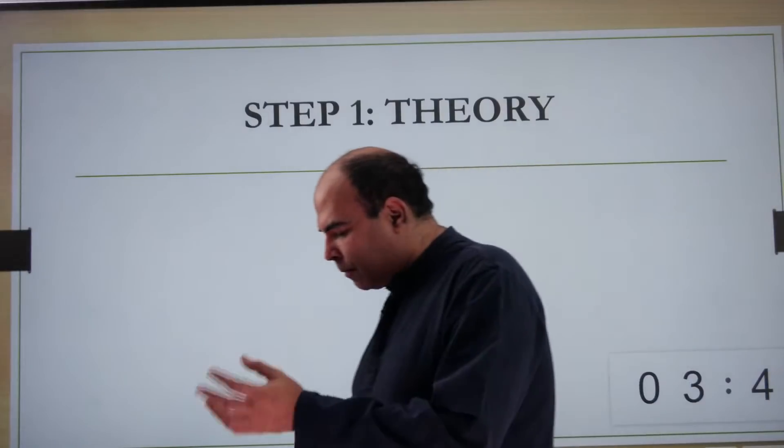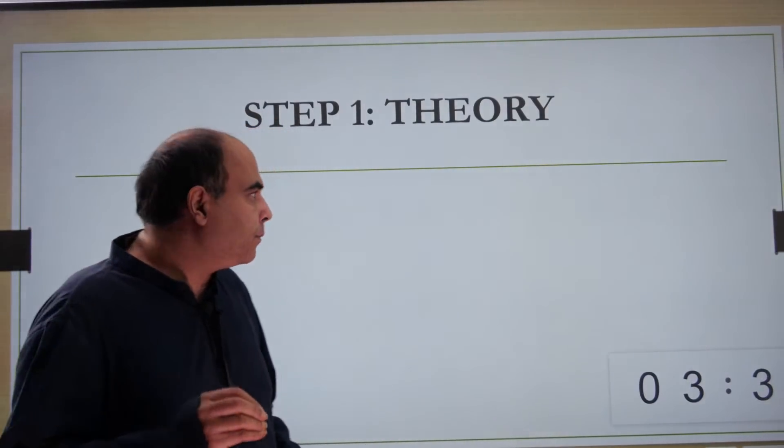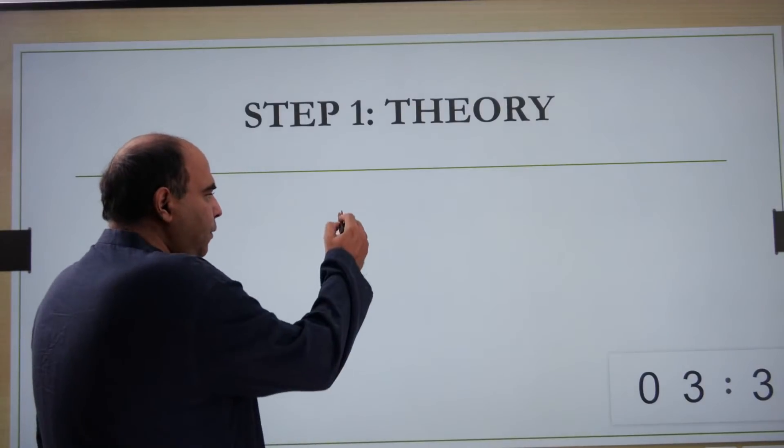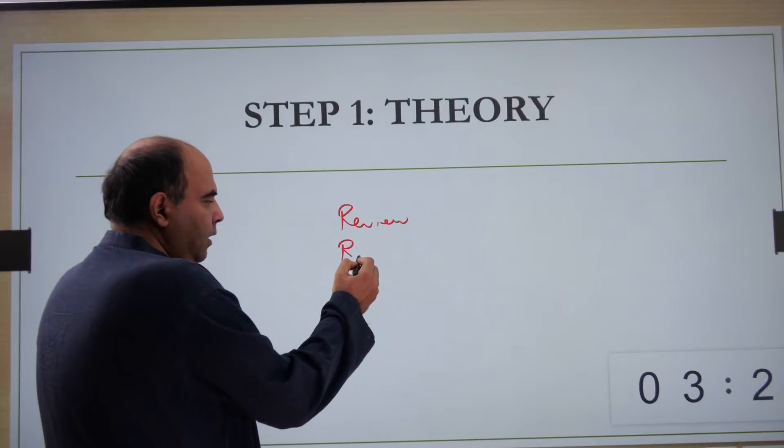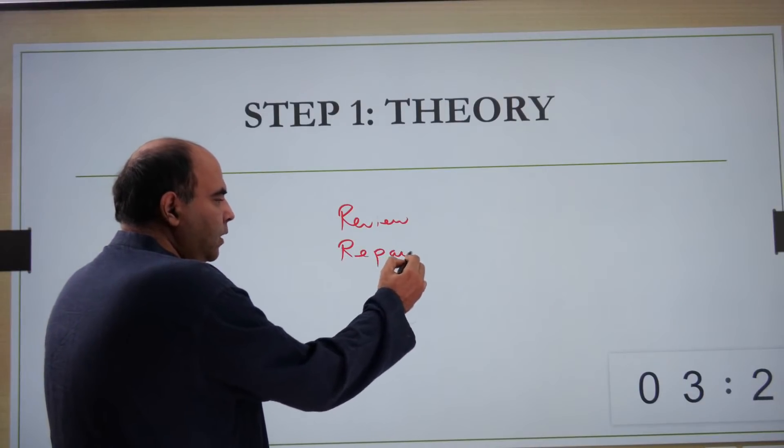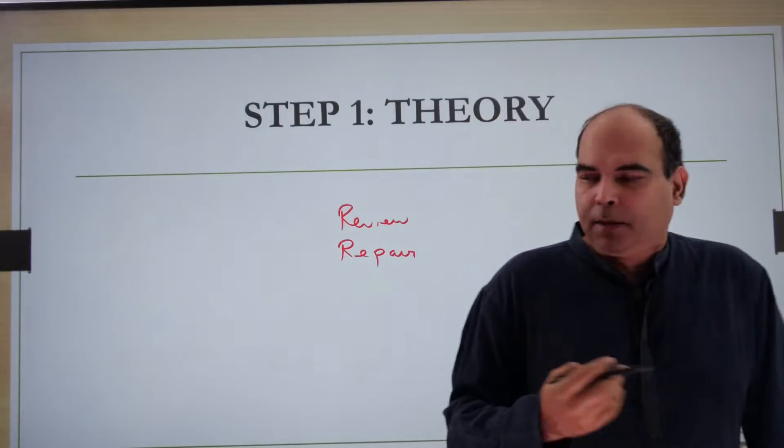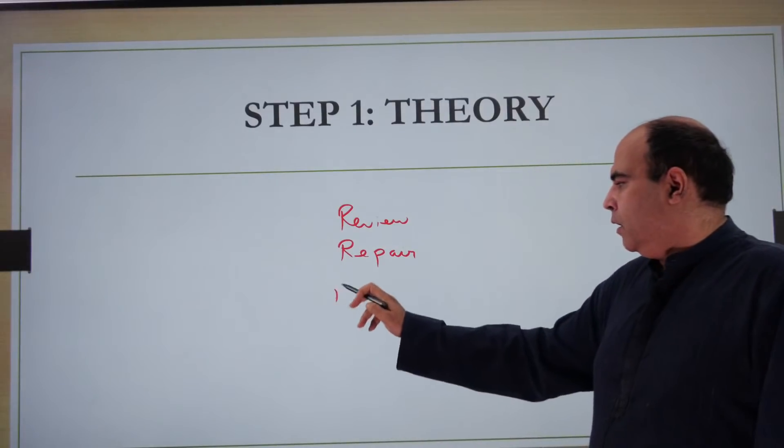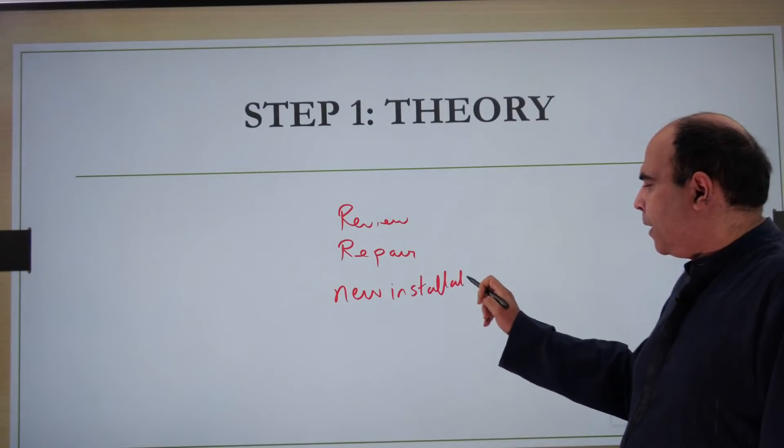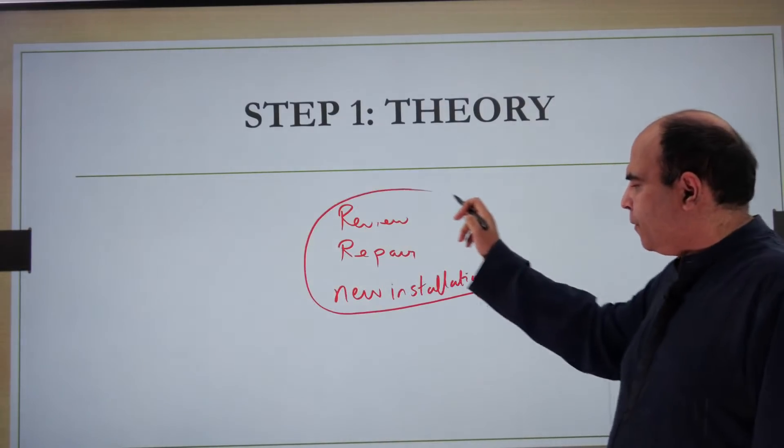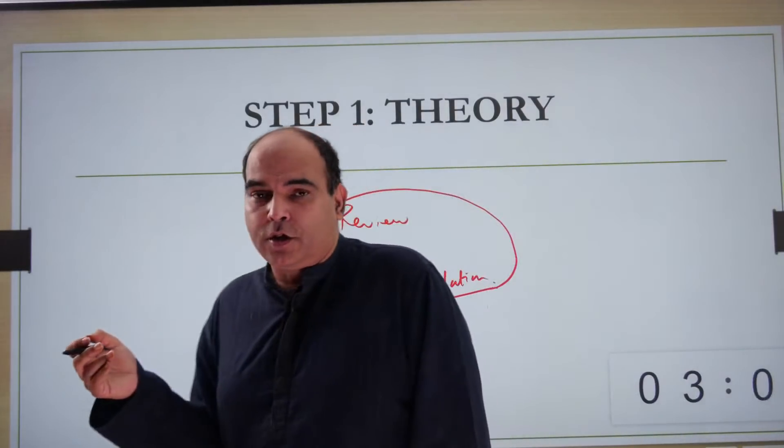To do this journey there are three or four steps. The first step of the journey is of course theory. When you are doing the theory of a chapter, some part of the theory will be just a review for you. Some part of the theory will be a repair - that means you knew it earlier and you forgot it, so it's getting repaired in your head. And some part of the theory will be a new installation - you had never heard of that part of the theory in the chapter.